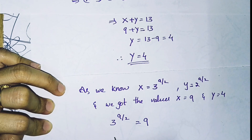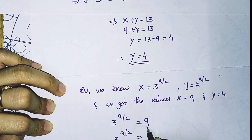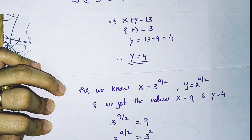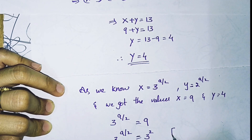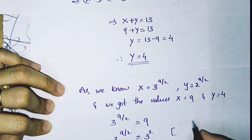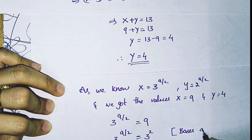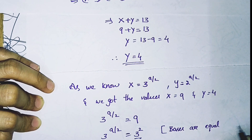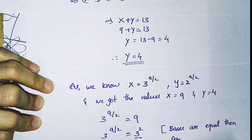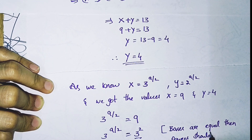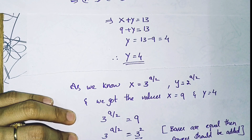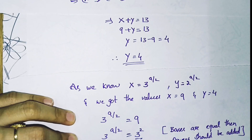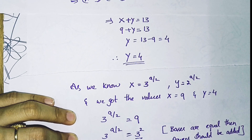We have 3^(a/2) = 9, which can be written as 3^(a/2) = 3². Since the bases are equal, the powers must be equal: a/2 = 2, therefore a = 4. The value of a is 4.